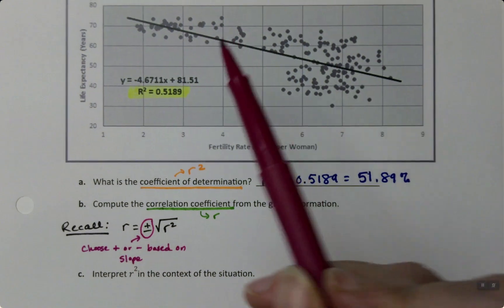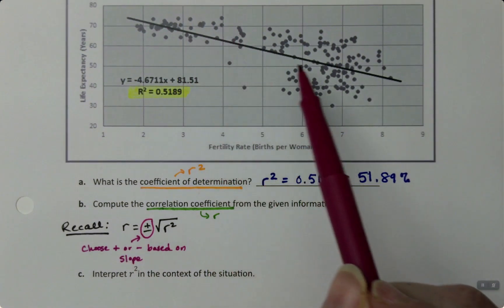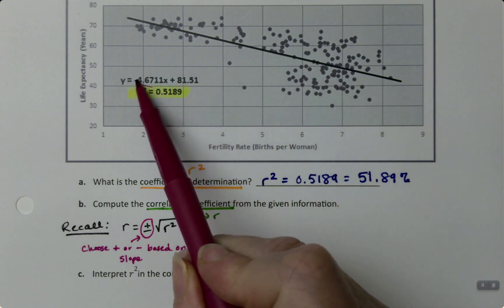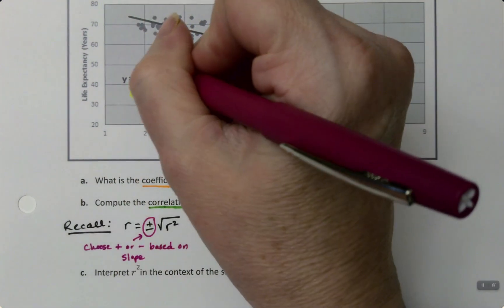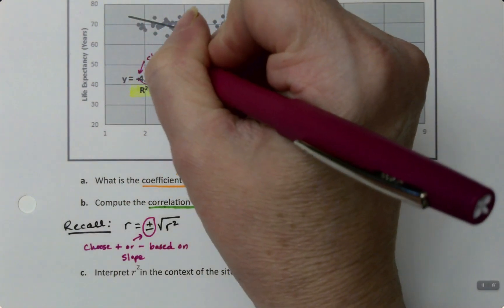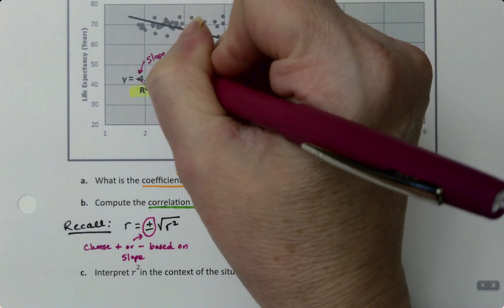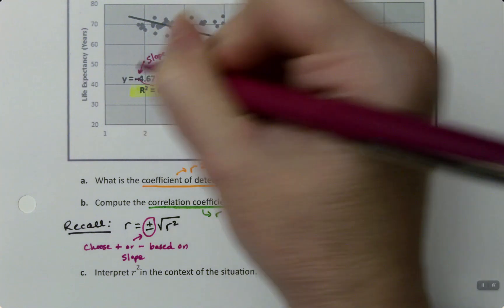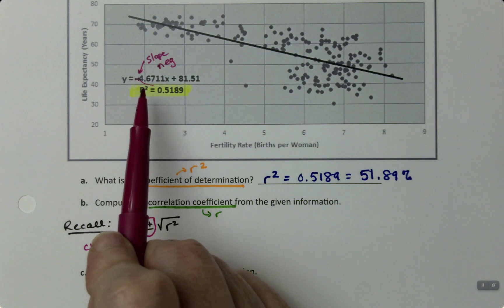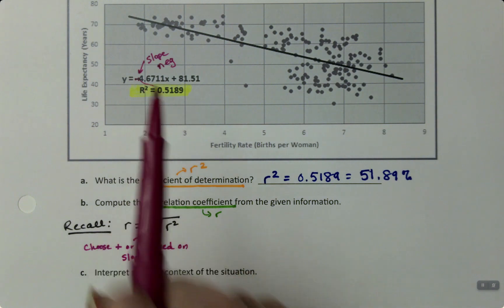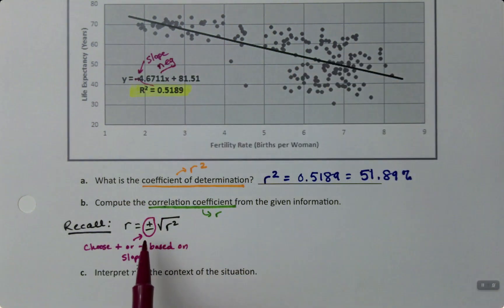Which, when I look at this graph, I can see it has a downward slope, and I can also see the slope right there. R is negative. It's that negative right there in front of that 4.6711. Alright, so that means I'm definitely going to choose the negative version.